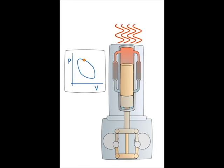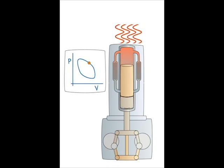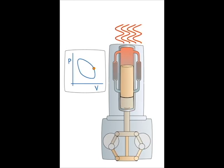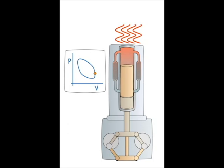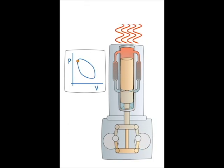The dot in the PV loop maps the conditions of the working fluid through each cycle. Note that the area enclosed by this loop is the total energy delivered to the flywheels per cycle.